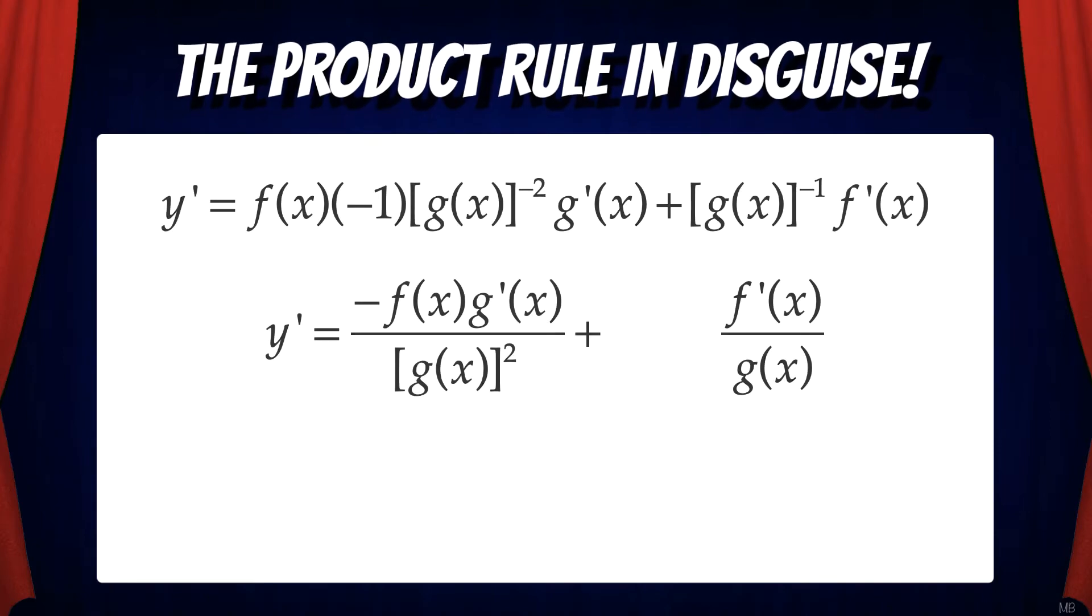Then we can simplify the algebra by moving the terms with the negative exponents to the denominator. On the right you can see that we have a g in the denominator, but on the left we have g squared in the denominator. So we're going to multiply the right term by g over g.